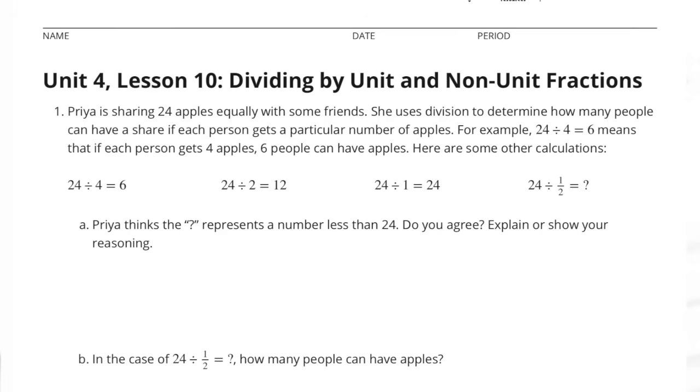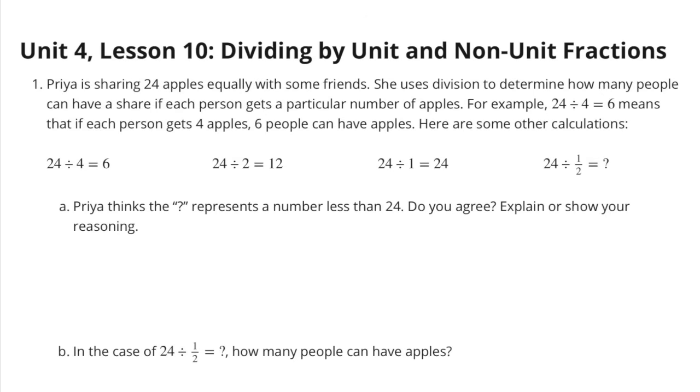Unit 4 Lesson 10: Dividing by Unit and Non-Unit Fractions. Number 1. Priya is sharing 24 apples equally with some friends. She uses division to determine how many people can have a share if each person gets a particular number of apples. For example, 24 divided by 4 equals 6 means that if each person gets 4 apples, 6 people can have apples. Here are some other calculations.